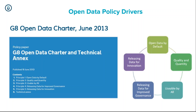Principle four is releasing data for improved governance — issues around improved transparency and accountability of government. Publishing the data that you make your decisions based on improves accountability. And then finally, releasing data for innovation — the data held in these organisations is an asset, but what else can be done with it? Can data be linked together from different silos to gather new intelligence or create new services?